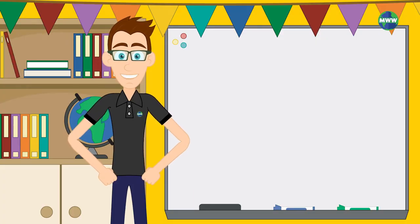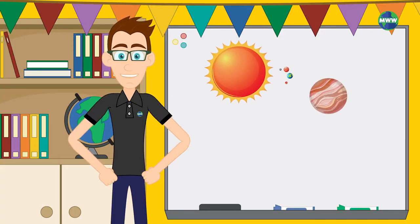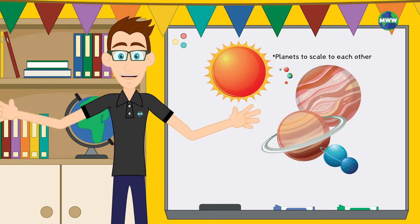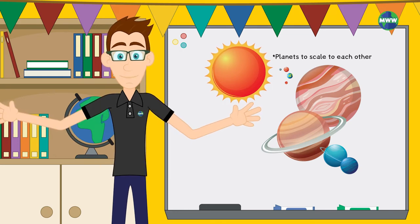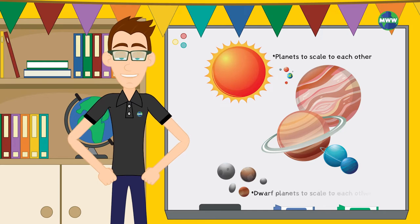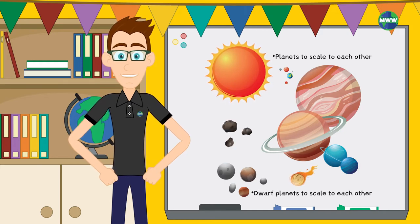Our solar system is made up of one star, eight planets, and many other small celestial bodies such as moons, dwarf planets, asteroids, and comets.